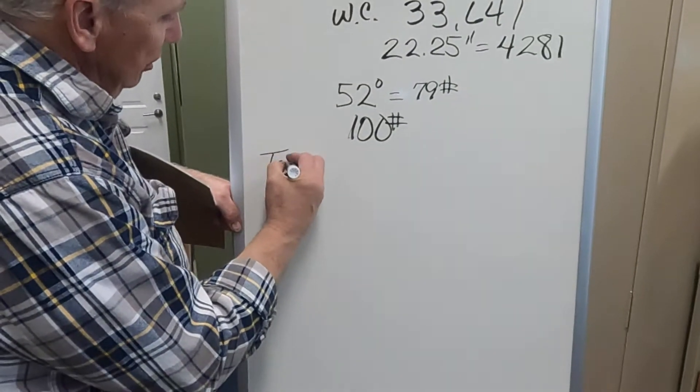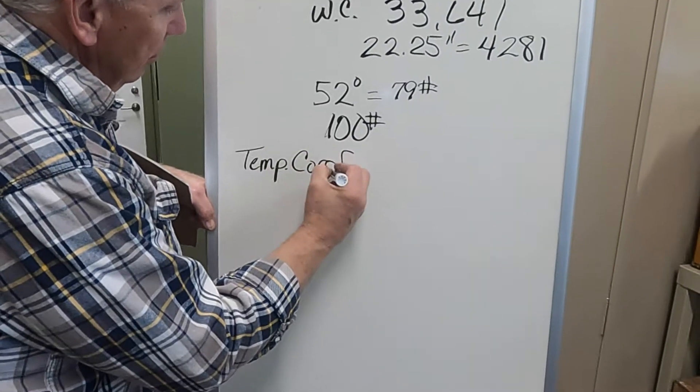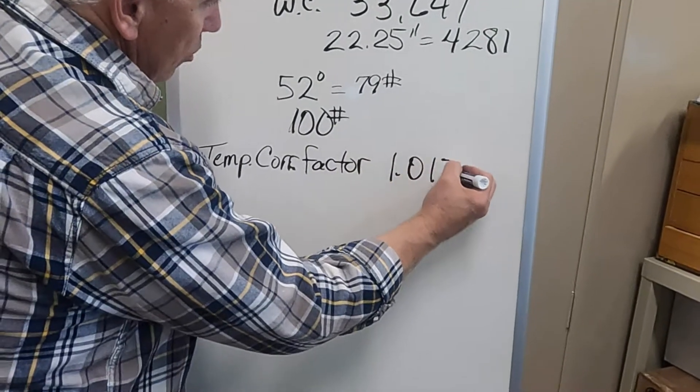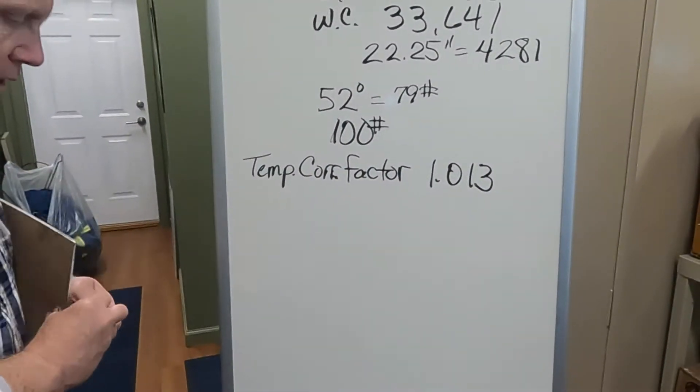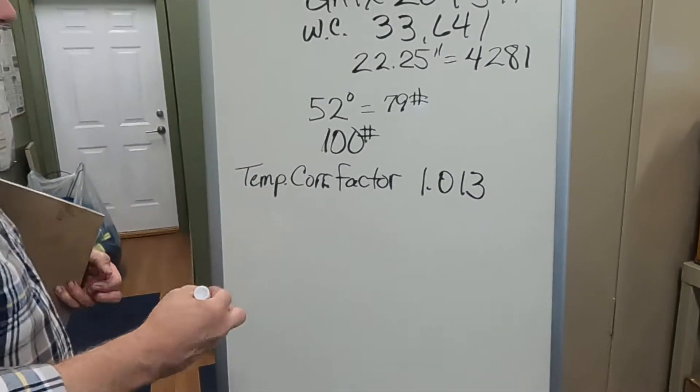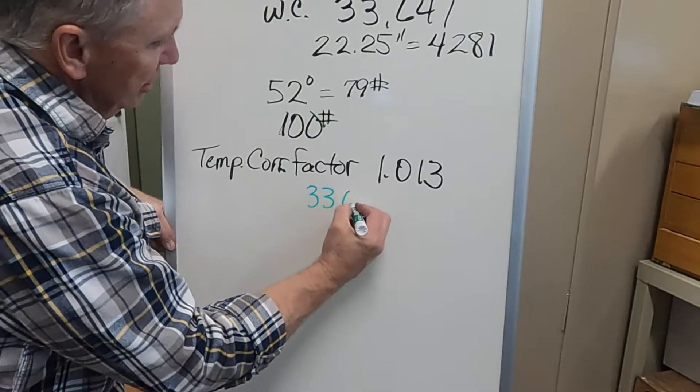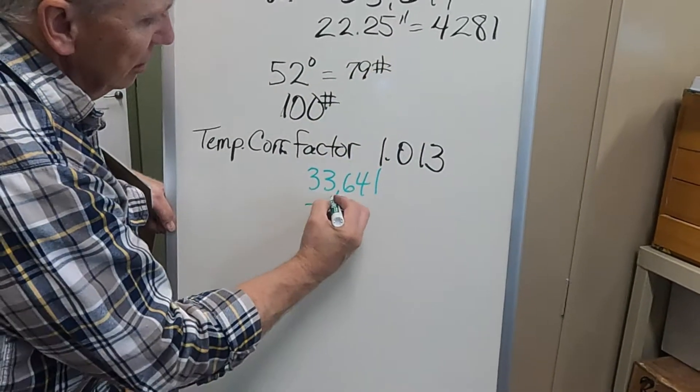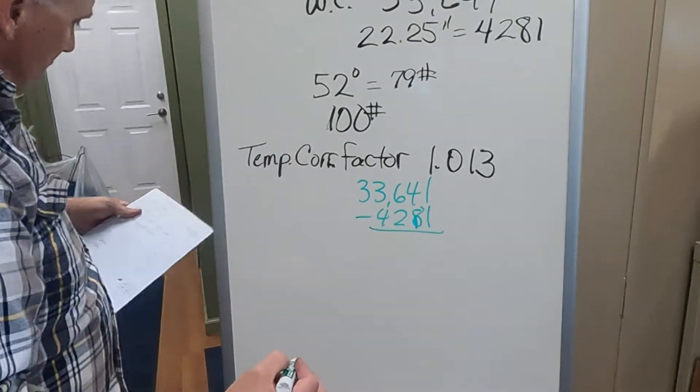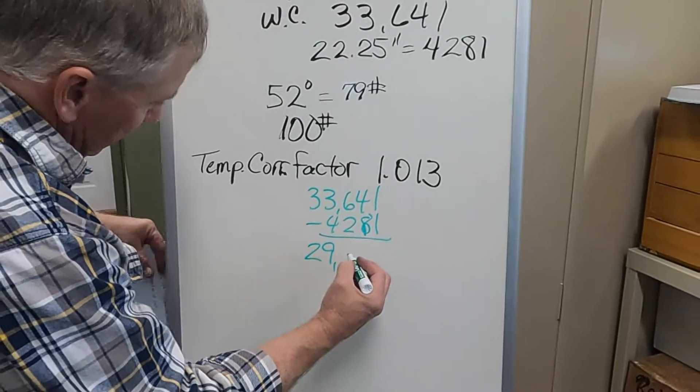So, temperature correction factor, 1.013. Now we're going to just do some basic math. So we're going to take our water capacity, 33,641 minus 4,281,